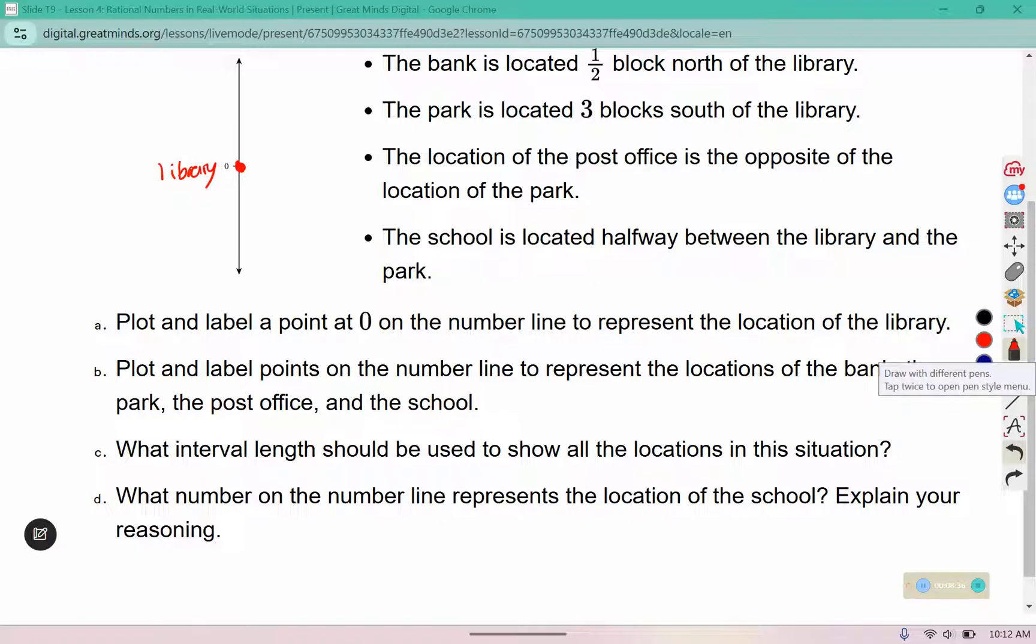B plot and label points on the number line to represent the locations of the bank, the park, the post office, and the school. Well, before I do that, I have to decide what to count by. What interval length should be used to show all the locations in this situation? Well, I have a half, I have three, I have halfway, so I'm going to count by one half.